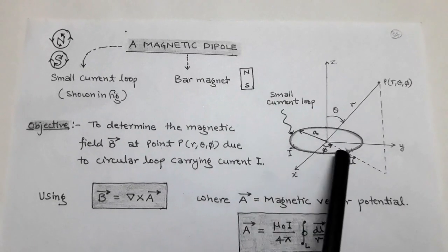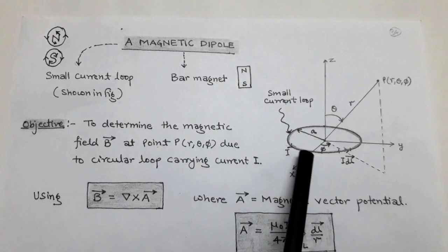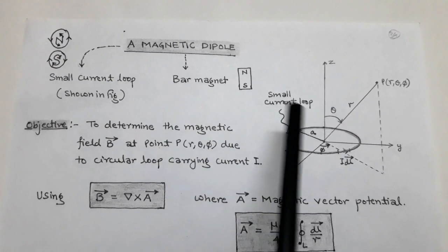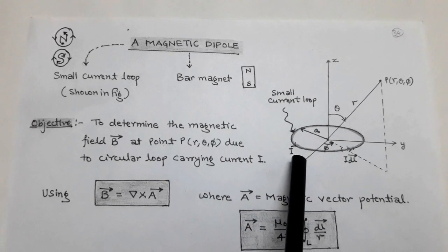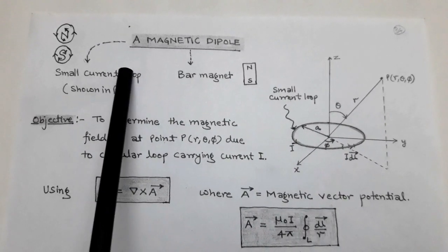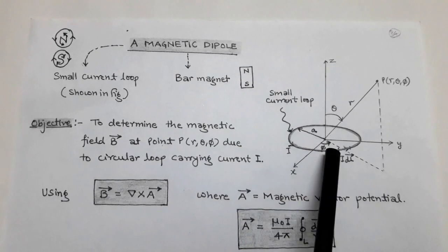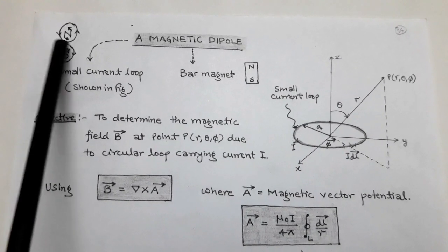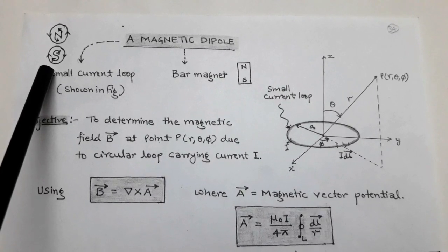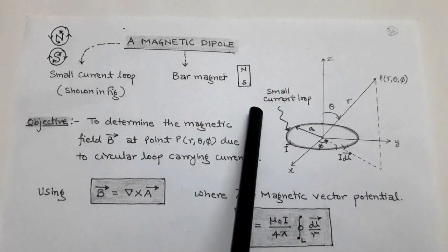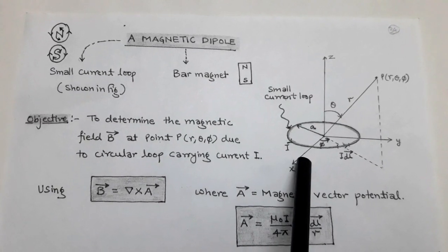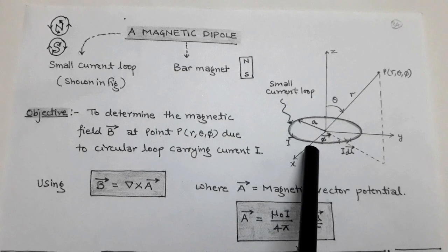A current loop situated on the xy-plane behaves as a magnetic dipole since current flows in the anticlockwise direction. Using the right-hand thumb rule we can determine the direction of the magnetic field intensity. When viewed from the top, the anticlockwise current acts as a north pole, and when viewed from the bottom the clockwise current behaves as a south pole. Thus a small current loop has two poles, north and south.